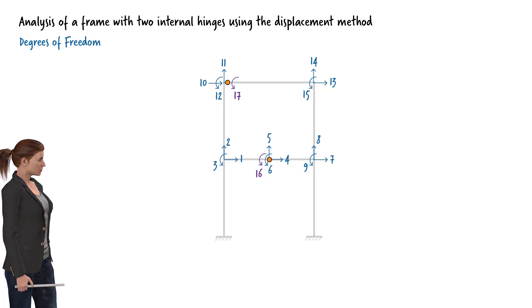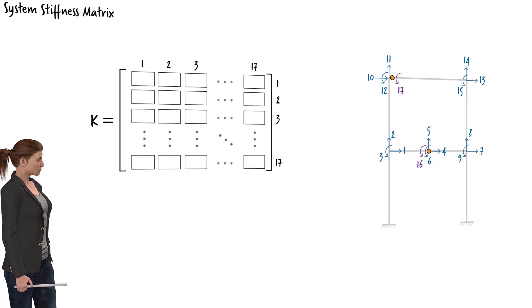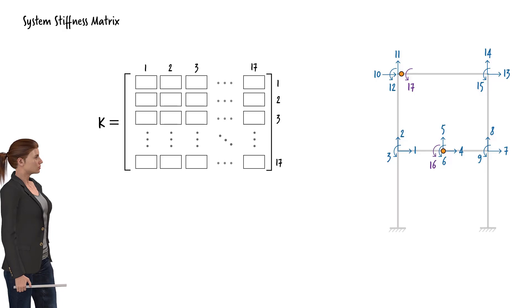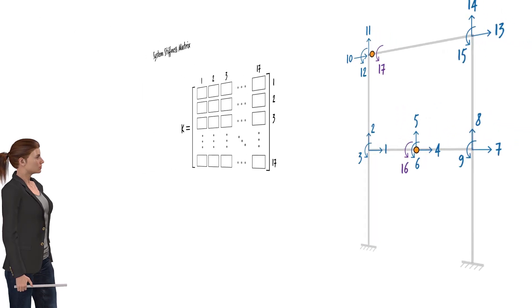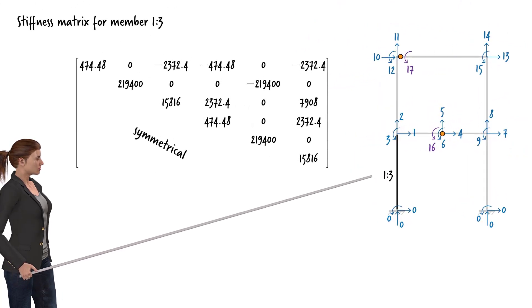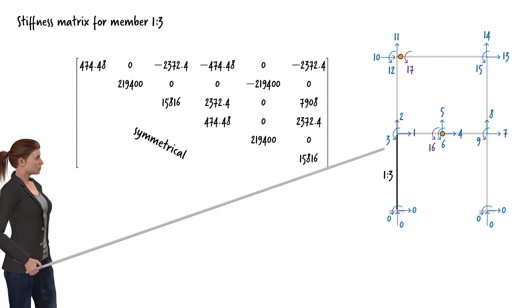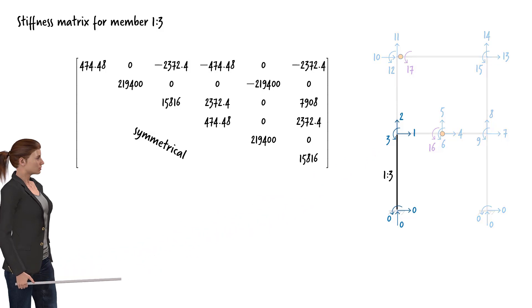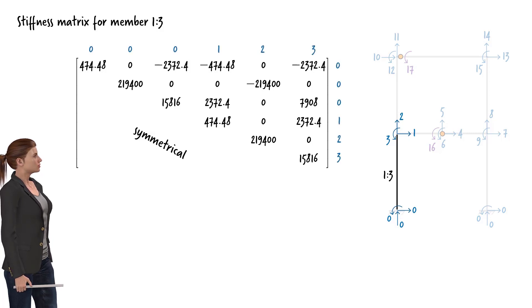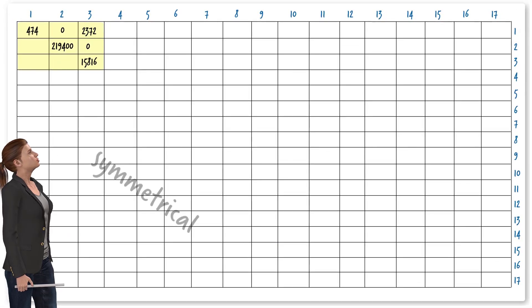We are now ready to assemble the system stiffness matrix. The size of the system stiffness matrix equals the number of degrees of freedom for the frame, meaning it has 17 rows and 17 columns. Let's determine how each beam and column contributes to the system stiffness. For column 1-3, no degrees of freedom are associated with the lower end; the degrees of freedom at the upper end are 1, 2, and 3. The part of the member stiffness matrix that contributes to the system stiffness is the block associated with rows and columns labeled 1, 2, and 3, which we write into a 17 by 17 matrix.